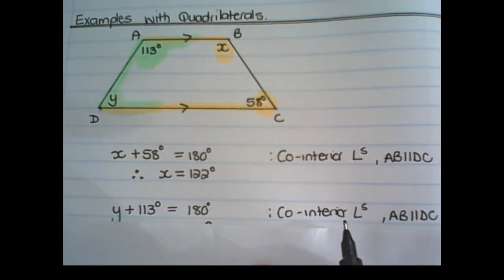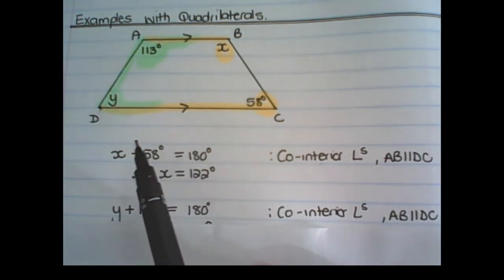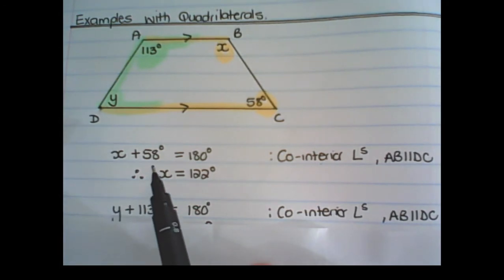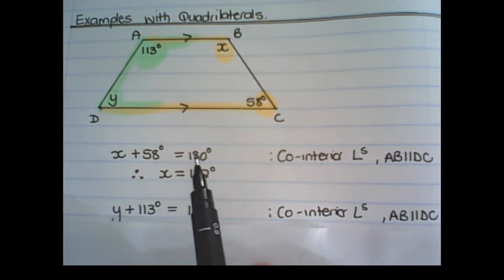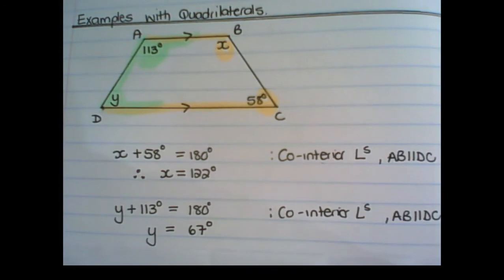Even though we are using the exact same reason, we need to write it again. Because this first reason states why this equation on the left is true, and that same reason also states why this equation is true. Remember in geometry we need to state why we can set up our equations like that, with reasons. Now I can solve Y by transposing the 113 degrees.